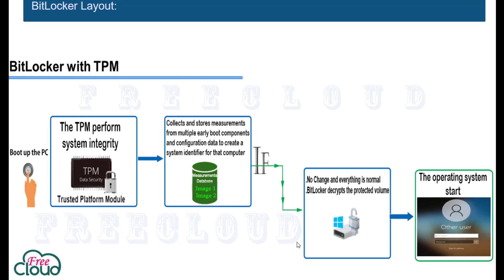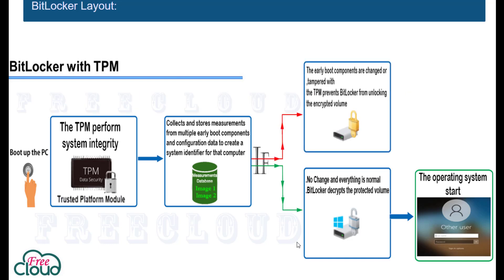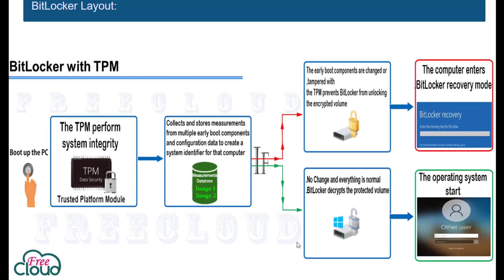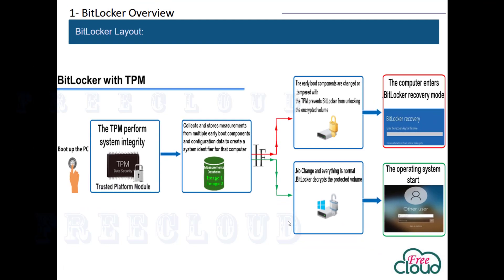Then the operating system starts normally. If the early-boot components are changed or tampered with — such as changing the BIOS settings, changing the master boot record, or moving the hard disk to a different computer — the TPM prevents BitLocker from unlocking the encrypted volume. The computer enters recovery mode and cannot start until the BitLocker recovery key is entered.